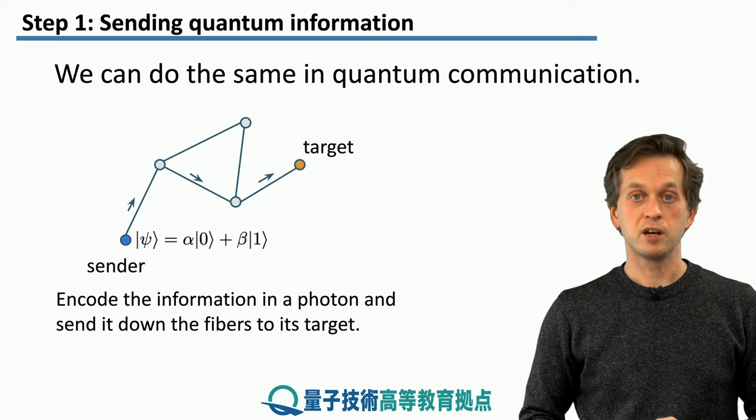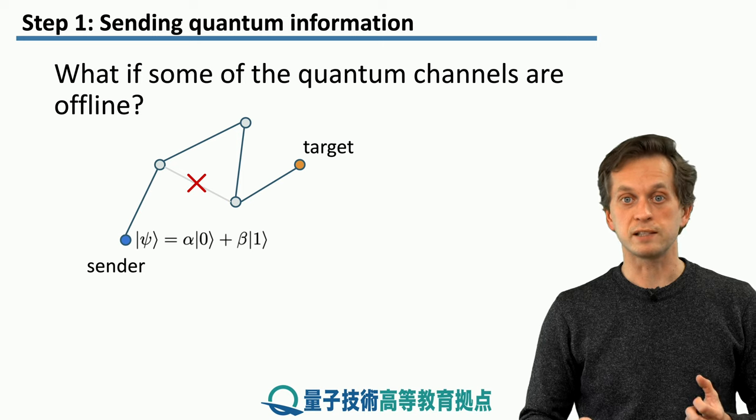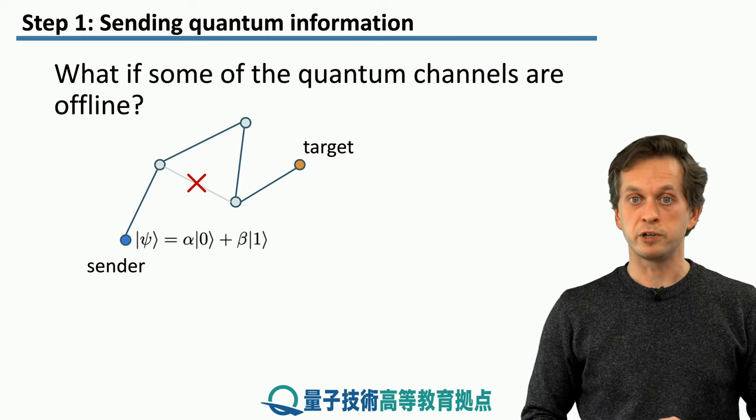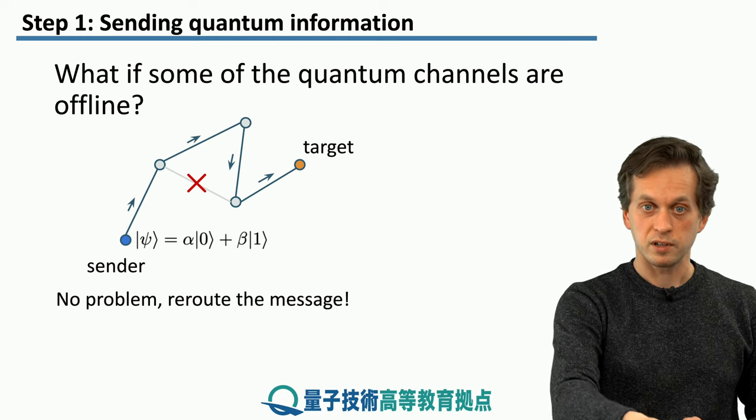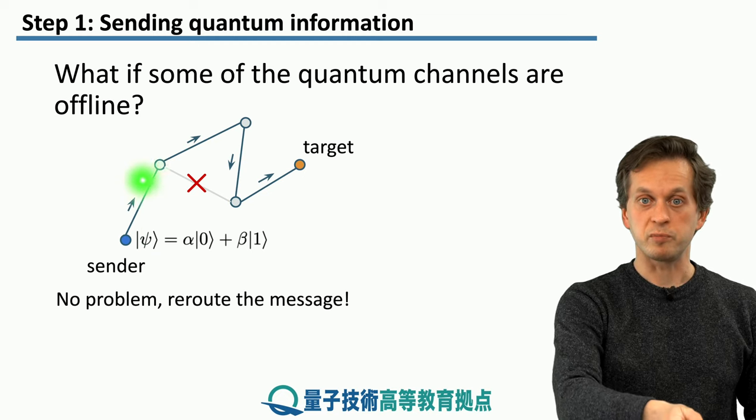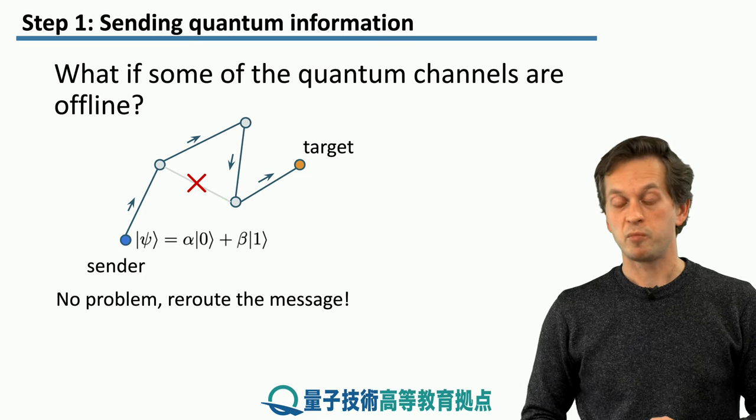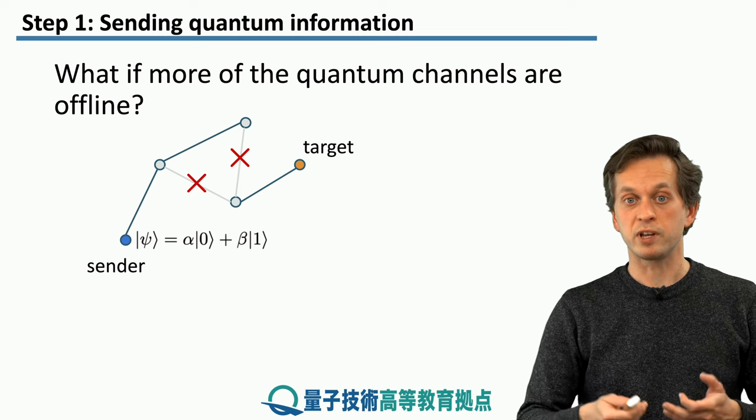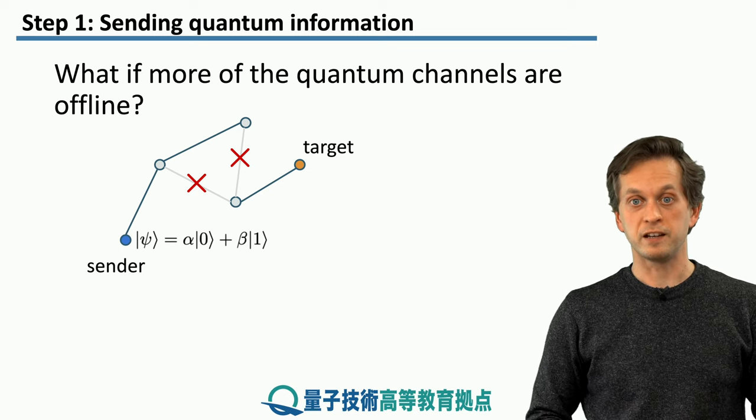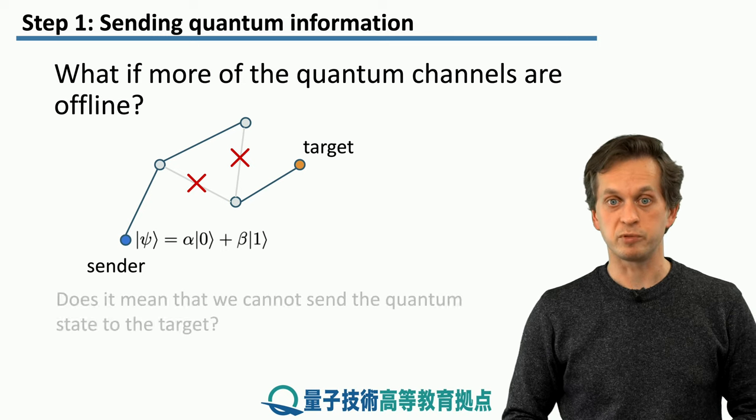But what happens if one of the links, one of the quantum channels, is not working? Well, in this particular case, it's not a big problem, because the message can be simply rerouted to go around the damaged link and still reach the target. But what happens if another link is down? In this case, it seems like we cannot transmit the message to the target. Unless we use teleportation.